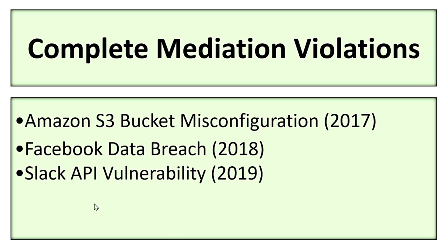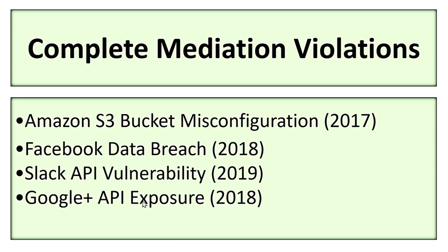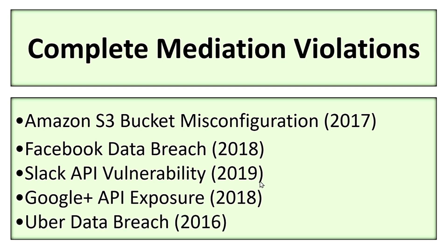There are many other examples — for instance, the Google Plus API exposure in 2018, where the API exposed personal data such as email addresses and profile details of users whose accounts were set to private. There is also the Uber data breach in 2016, where attackers gained access using old credentials and API keys that were not properly revalidated.